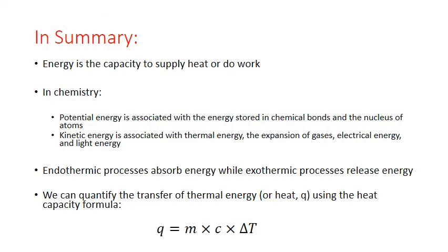In summary, energy is the capacity to supply heat or do work. And in chemistry, potential energy is associated with the energy stored in chemical bonds in the nucleus of atoms. Kinetic energy is associated with thermal energy, the expansion of gases, electrical energy, and light energy. Endothermic processes absorb energy, while exothermic processes release energy. And we can quantify the transfer of thermal energy, or heat, using the heat capacity formula. Q equals M times C times delta T.